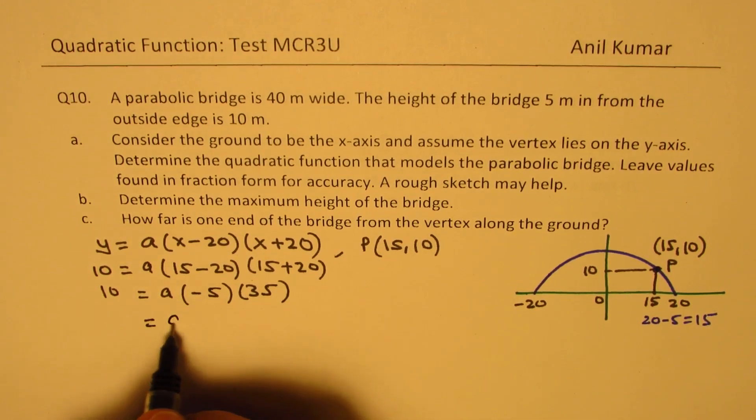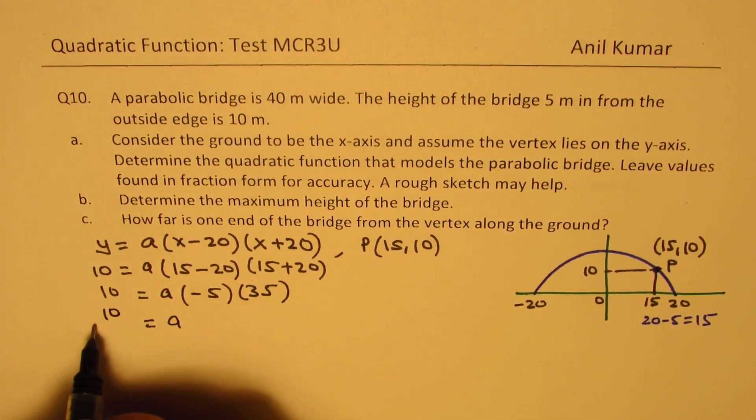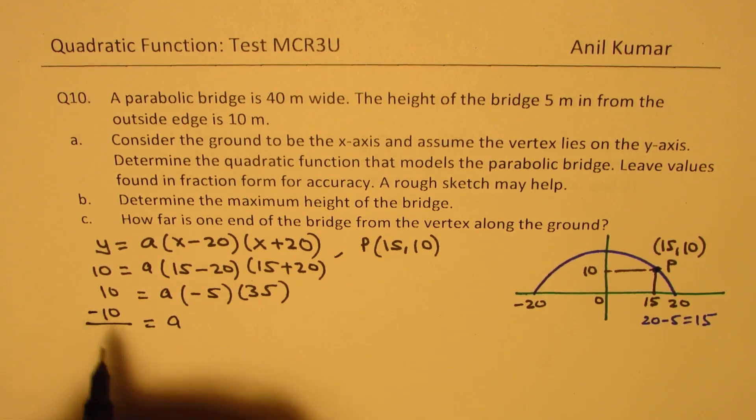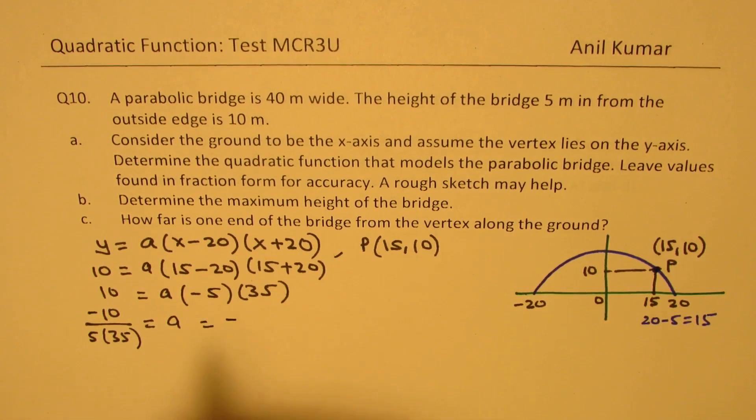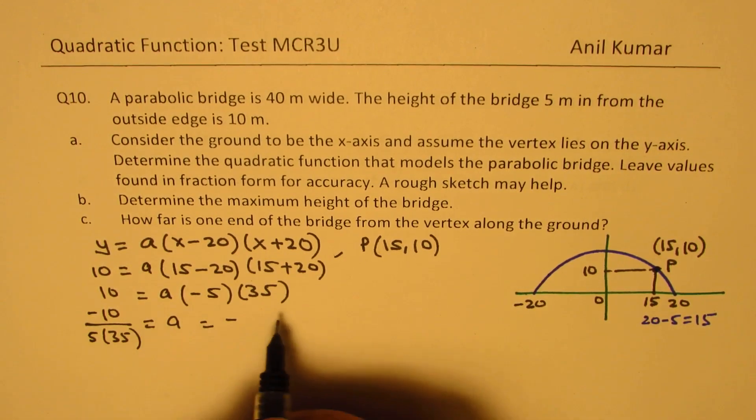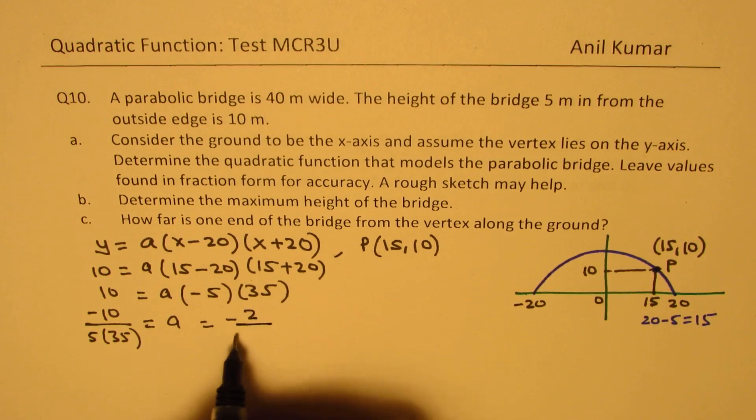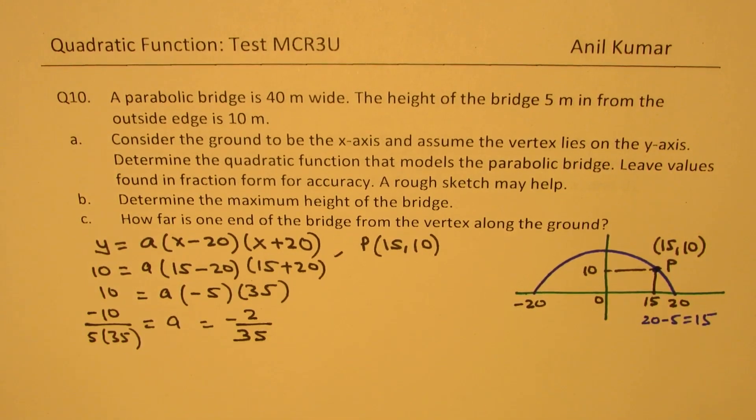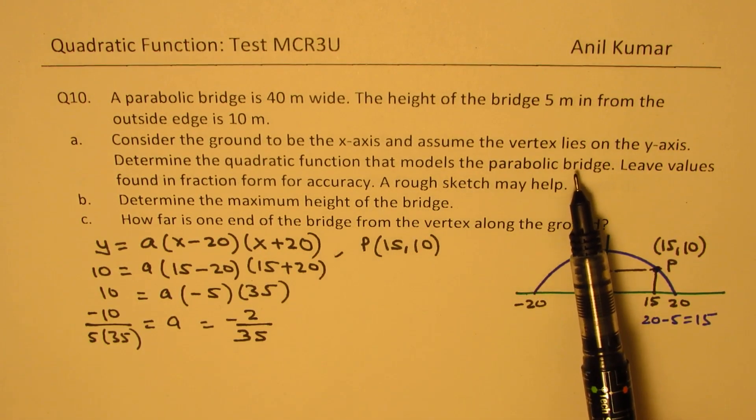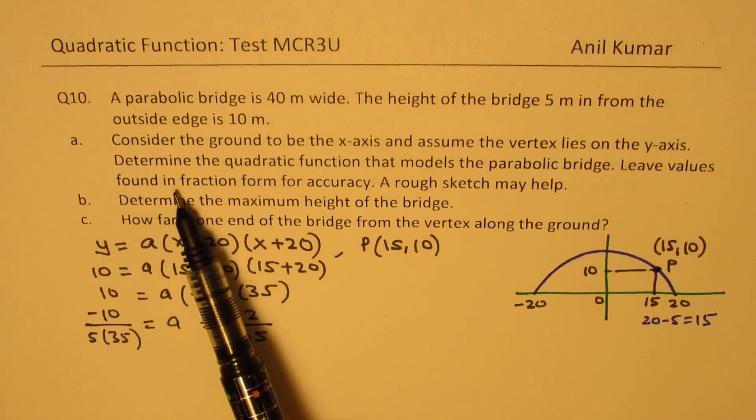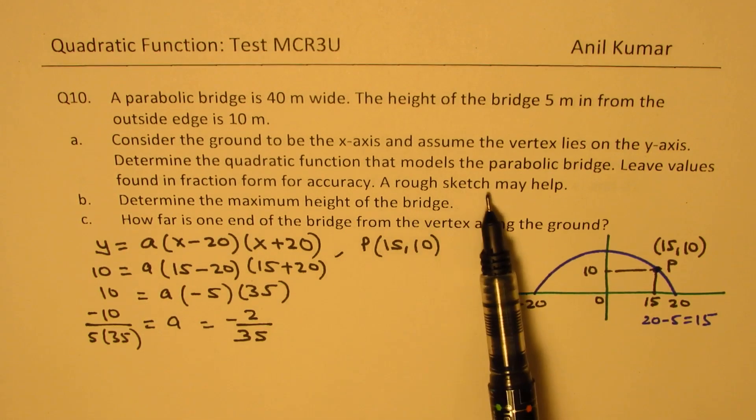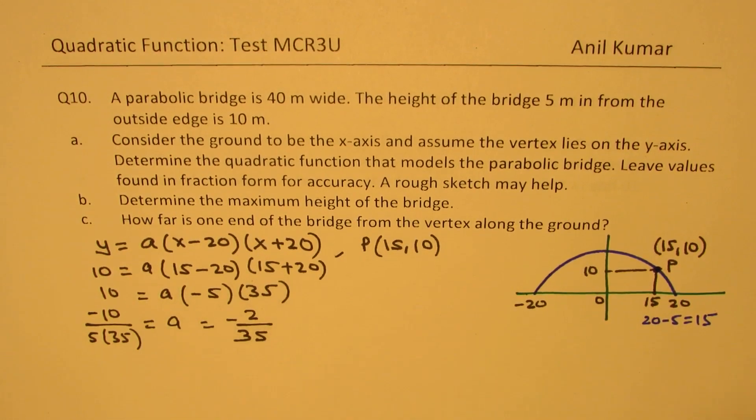So the value of a in this case will be 10 over, of course negative, 5 times 35. So we get y value as minus 2 over 35. So that becomes the equation of this line. Determine the equation of the function that models this parabolic form. Leave the values found in fractions. A rough sketch may be helpful. Okay. So we have done this.